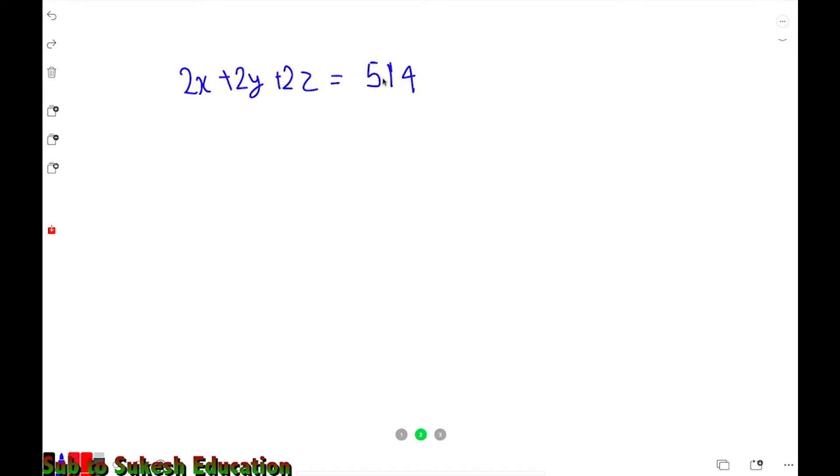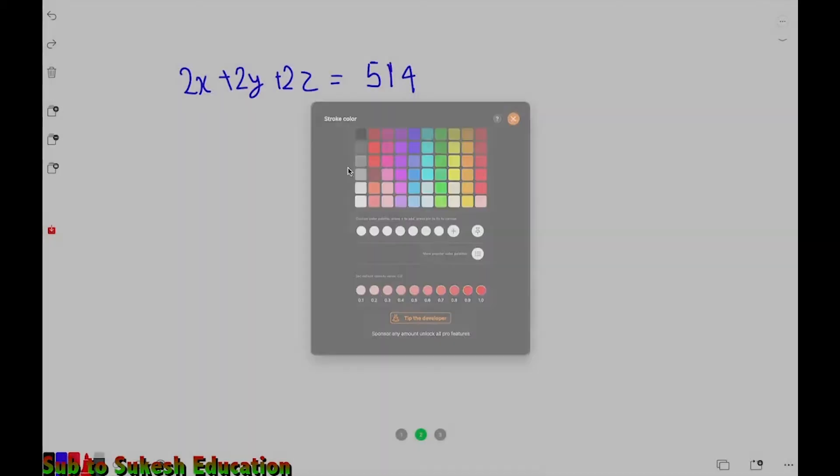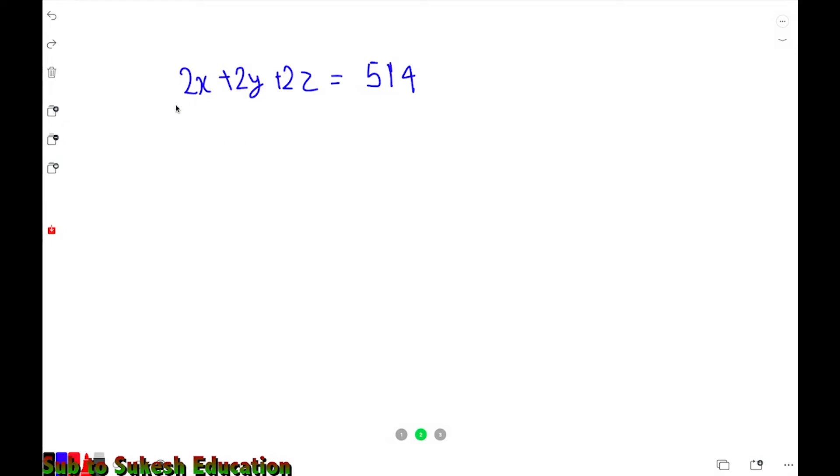Now to simplify this, if we divide the whole thing by 2, we get x plus y plus z. You have to divide by 2 on both sides to make the equation equivalent.